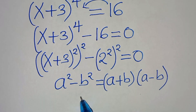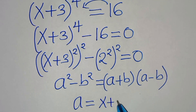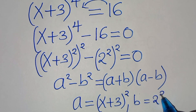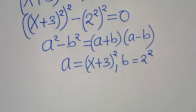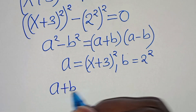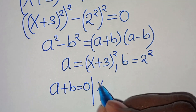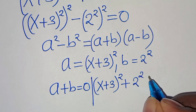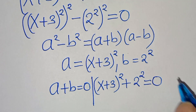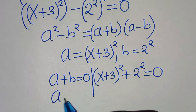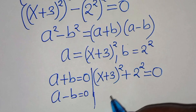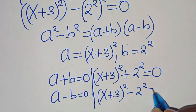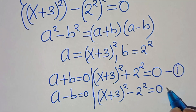From this equation, we have that a is equal to x plus 3 raised to the power of 2, and b is equal to 2 to the power of 2. This gives us Case 1: a plus b equals 0, which is x plus 3 raised to the power of 2 plus 2 squared equals 0, and Case 2: a subtract b equals 0, which is x plus 3 raised to the power of 2 minus 2 squared equals 0.